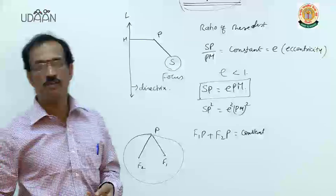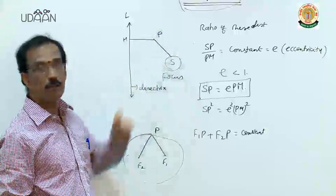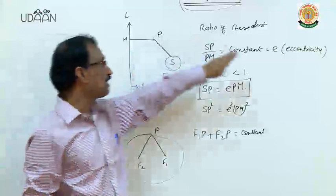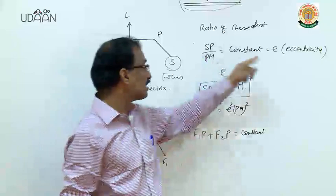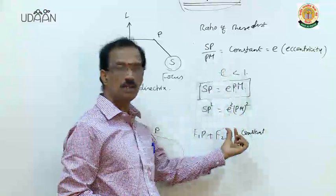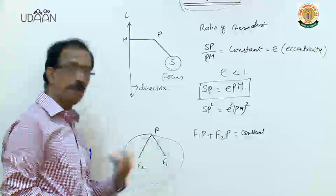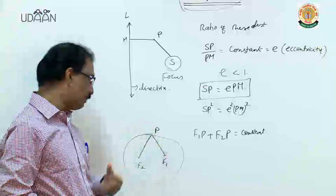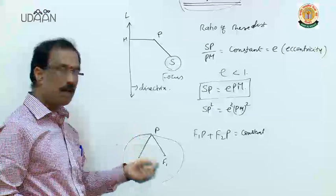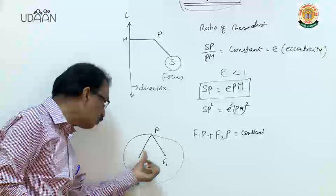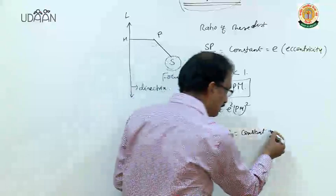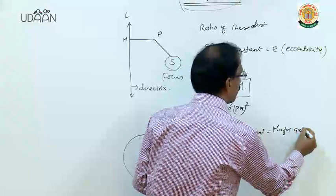These two fixed points are called the focus. In the previous definition, the fixed point is called the focus and the fixed line is called the directrix. The definition of an ellipse: the ratio of the distance of a moving point from a fixed point to a fixed line is a constant called eccentricity, and this constant should be less than 1. Alternatively, the sum of distances of a moving point from two fixed points is a constant equal to the major axis length.